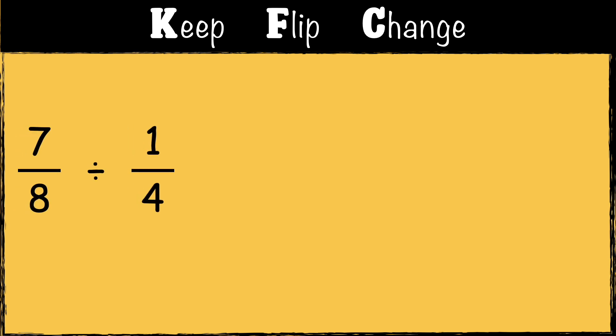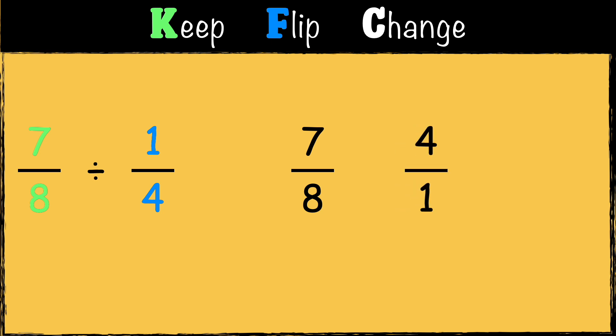Here's the last example: seven-eighths divided by one-quarter. First we have Keep — we keep the first fraction as it is: seven-eighths. Next we have Flip — one-quarter becomes four over one. Finally we have Change — we change the calculation from division to multiplication.